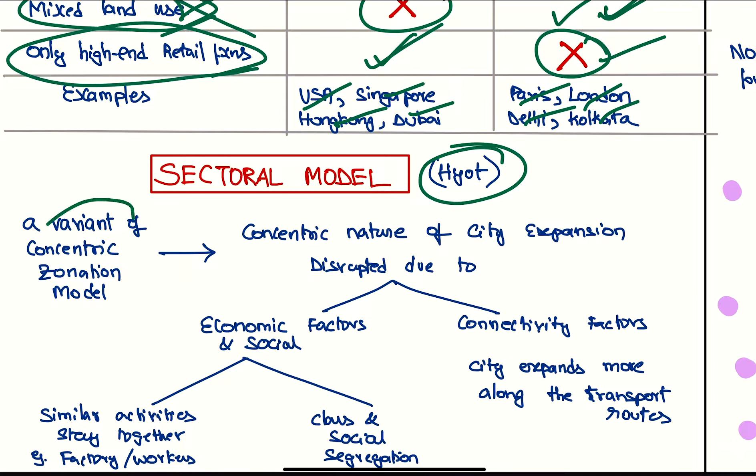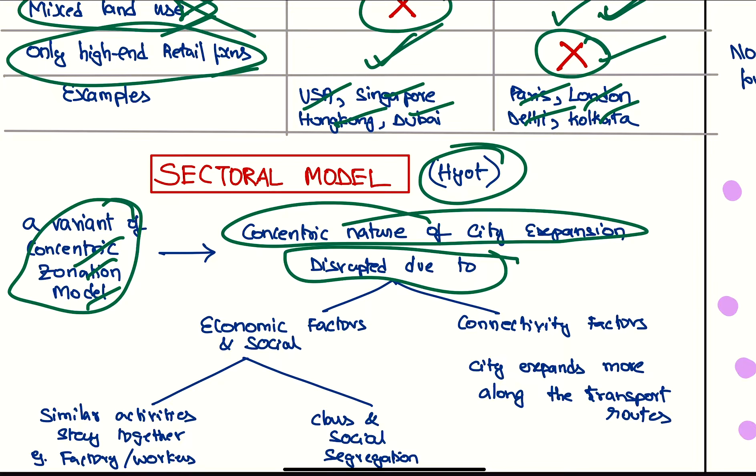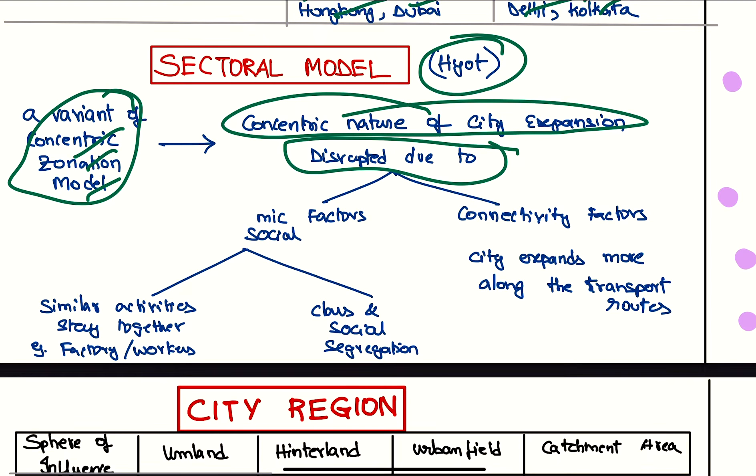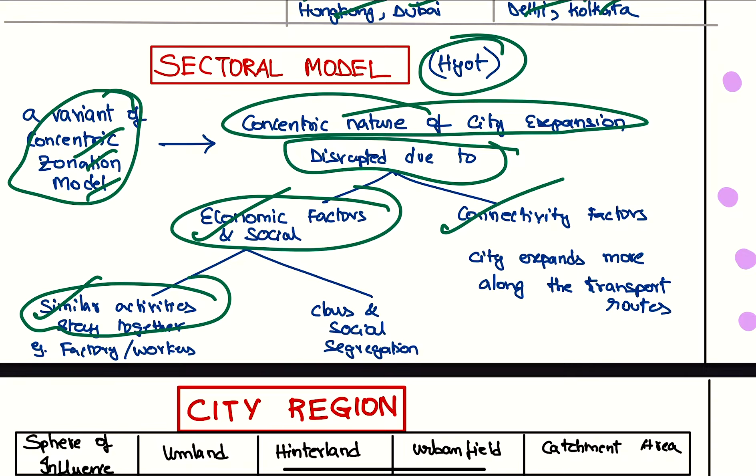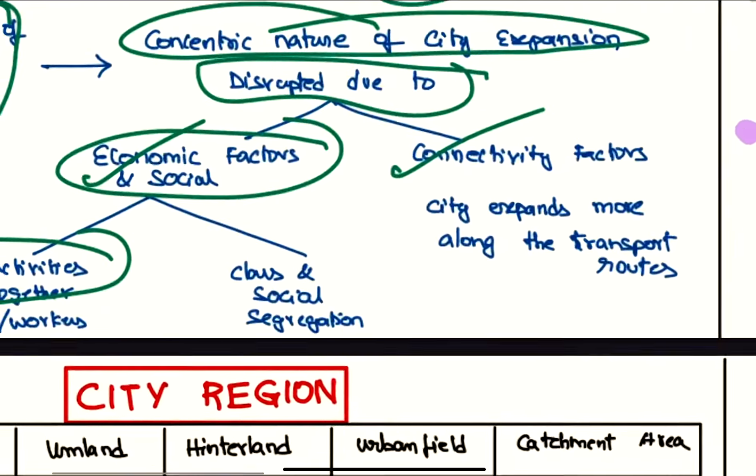Next we have the sectoral model given by Hoyt. This is a variant of concentric zonation model. According to him, concentric nature of city expansion is disrupted because of two reasons: economic and social factors, and connectivity factors. First, economic and social factors - similar activities stay together. For example, wherever there is a factory, there will be workers nearby.